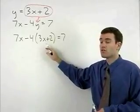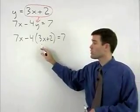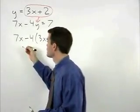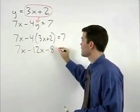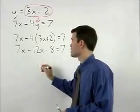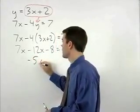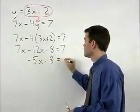Now we can solve for x. If we simplify on the left side, we get 7x minus 12x minus 8 equals 7, which simplifies to negative 5x minus 8 equals 7.